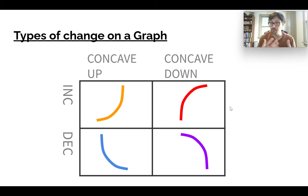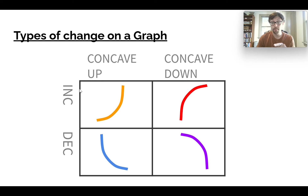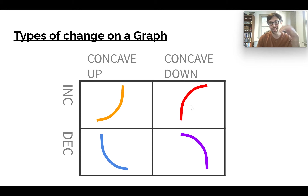Highlighting those different types of changes: this would be an example of being concave up and increasing, but increasing can also be concave down — this is increasing, but has that concave down shape.